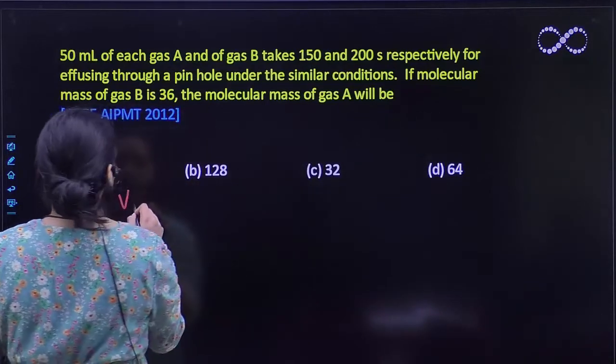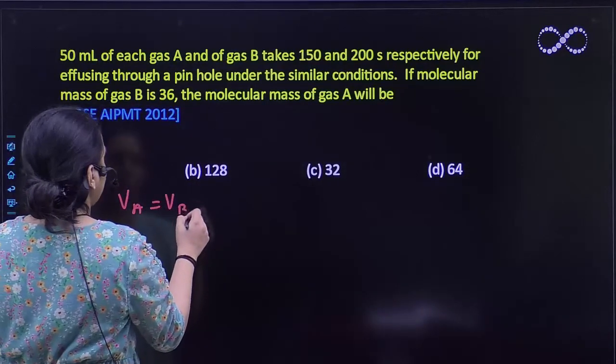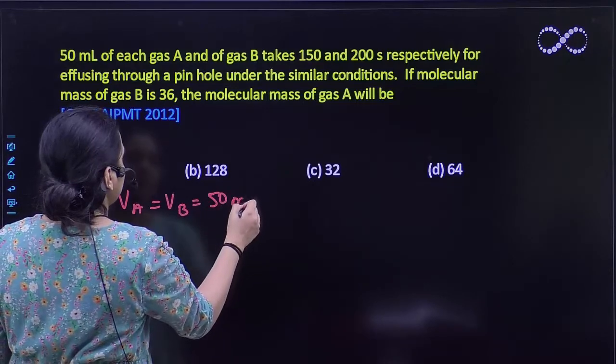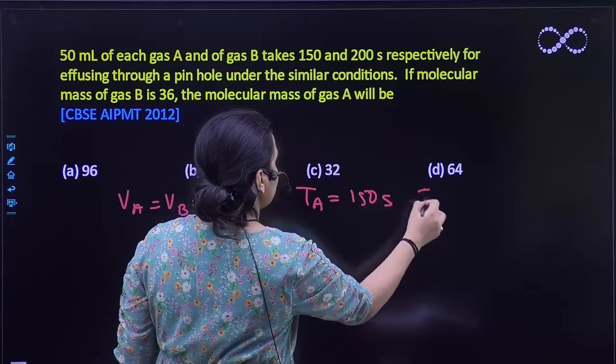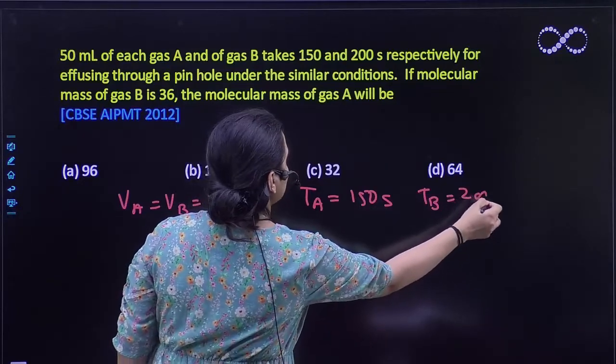Both volumes A and B are 50 ml, time taken by A to effuse is 150 seconds and time taken by B to effuse is 200 seconds.